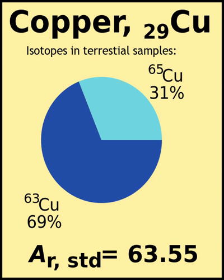Abridged atomic weight. The abridged atomic weight, also published by CIAAW, is derived from the standard atomic weight reducing the numbers to 5 significant digits. For interval values, borders are rounded downwards for the lower border and upwards for the upper border. This way, the more precise original interval is fully covered.